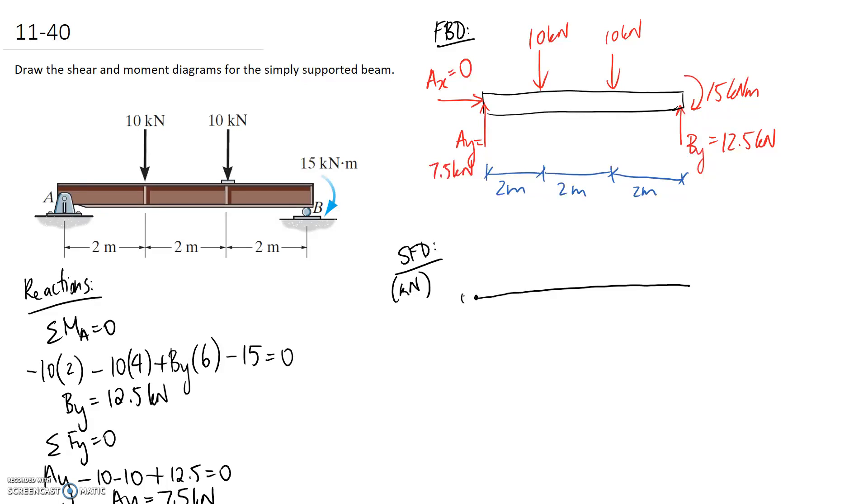At the beginning we're starting at 0 and immediately we're going to get pushed upwards 7.5kN. As we move through here nothing's happening so it's going to remain flat. We then get pushed down 10. 7.5 minus the 10 is going to take us to negative 2.5. We keep going across because there's nothing happening in here. And when we get to here we push down another 10 which is going to take us to negative 12.5.